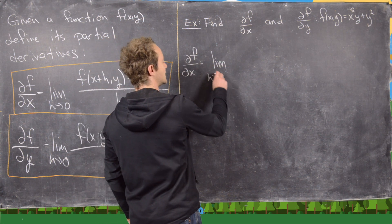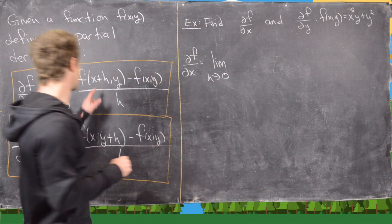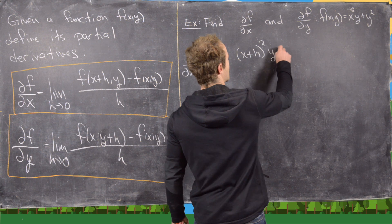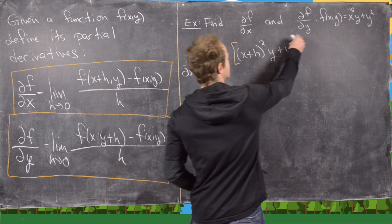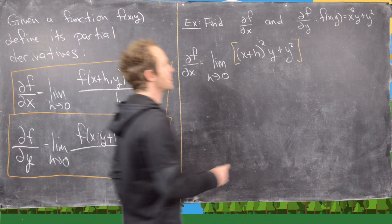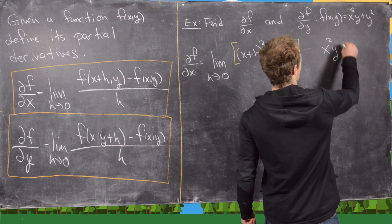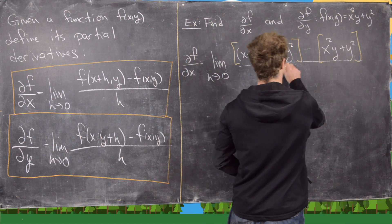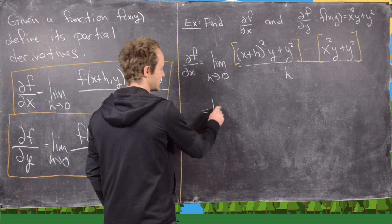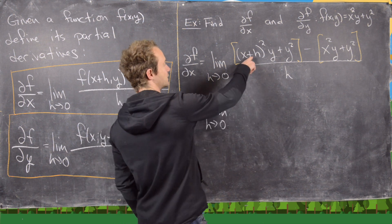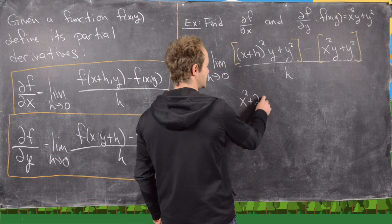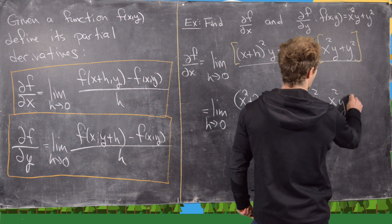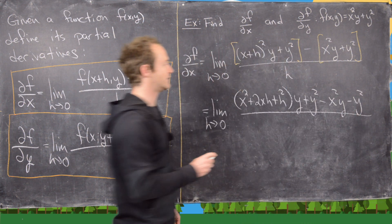That's going to be the limit as h approaches 0. We need to plug x+h everywhere we see x, so that gives us (x+h) squared times y plus y squared. That's our f(x+h, y), minus f(x, y), which is x squared y plus y squared, all over h. That simplifies to the limit as h approaches 0 of: x squared plus 2xh plus h squared, all times y, plus y squared, minus x squared y minus y squared.